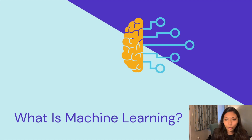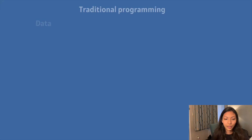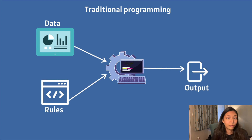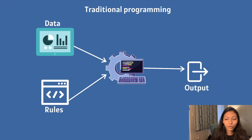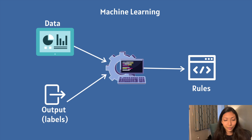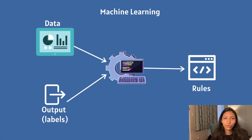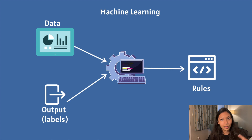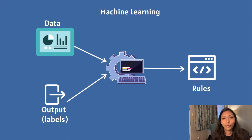Let me give you an example comparing traditional programming with machine learning. In traditional programming, you have data and you have rules — rules that a software engineer codes and writes out. You pass that data and those rules into the program and you get output, which is the solution you're looking for. In machine learning, you have data and you have output — the answers. For example, a dataset of labeled images of cats and dogs: you have the data, and the output is the labels. You pass that into a machine learning model and it actually extracts the rules.